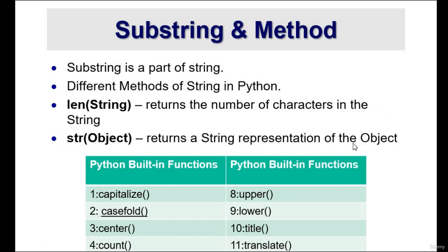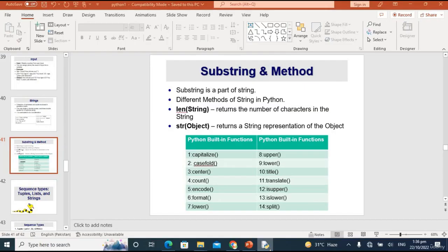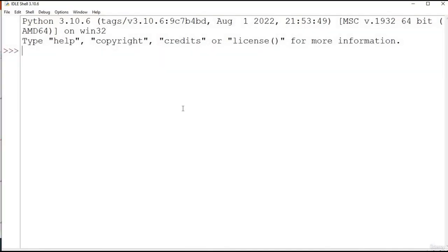str() is a data type that returns a string representation of an object. The list contains all the built-in functions of Python and we will use some of them in our examples. Without wasting any time, let's jump to the code editor.